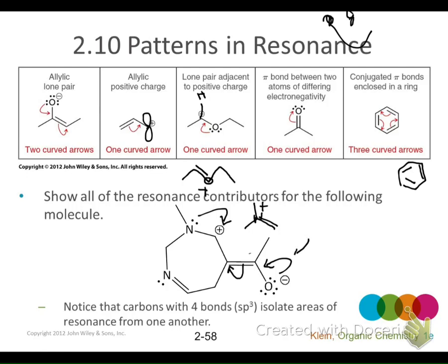If I push those and push these, I could also take this and push it over to here. That is a resonance contributor for that molecule. Rather than putting the electrons here, where would they be happier? They would be happier up here canceling out this positive charge. So what you end up with — draw it over on the side — is this oxygen with a single bond here and a double bond going up here like that.